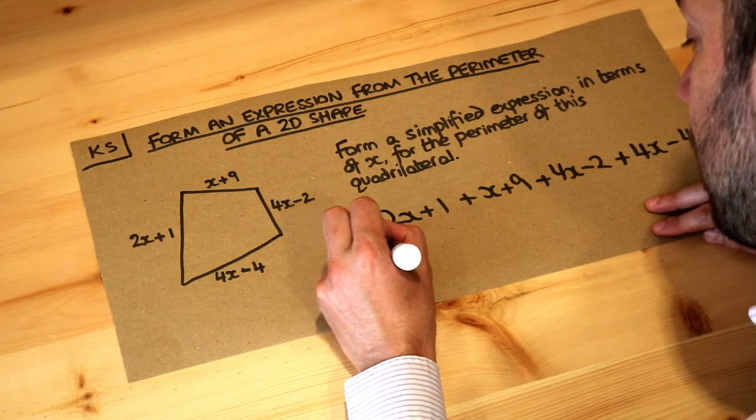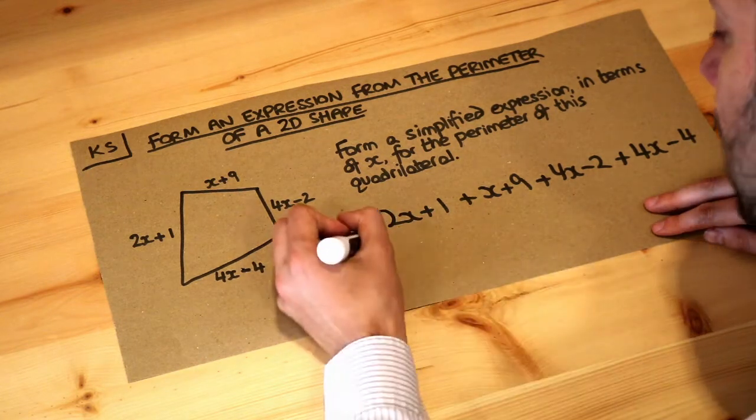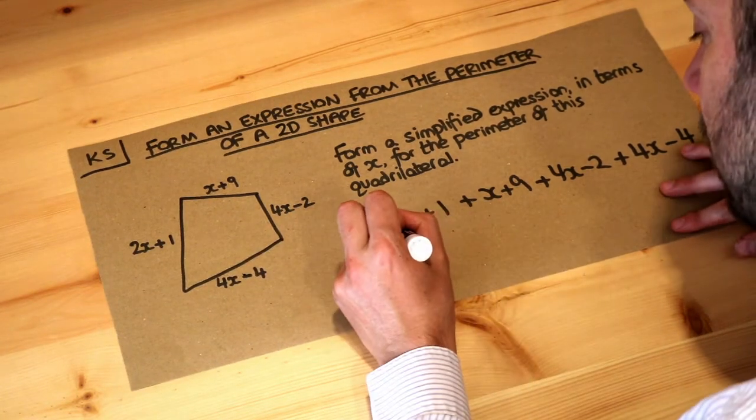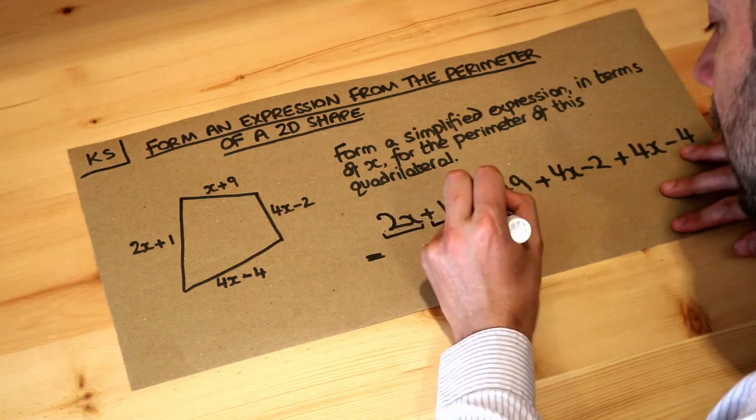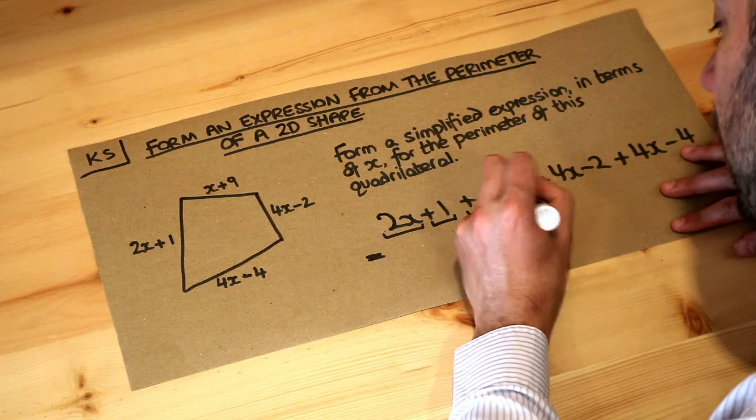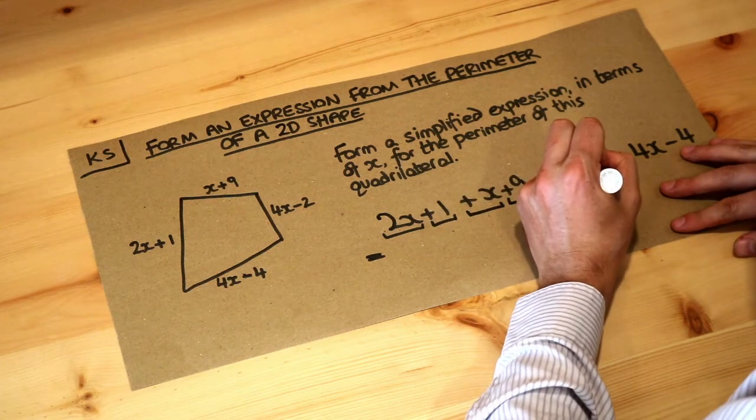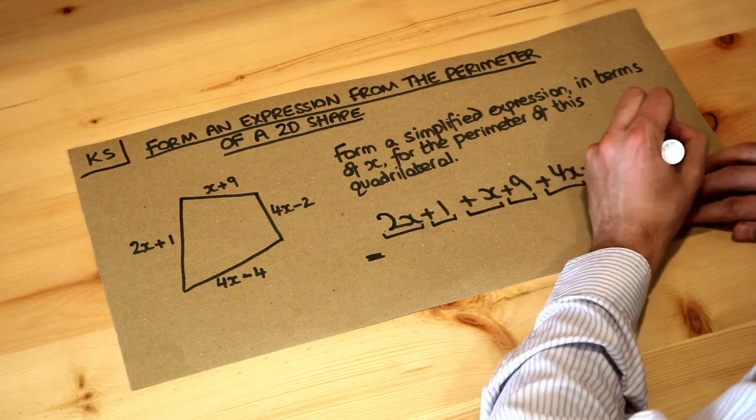Now we need to simplify this, so let's collect like terms. I like to underline each of the terms, including the plus or the minus in front of each. So we've got 2x plus 1, plus x plus 9, plus 4x minus 2, plus 4x minus 4.